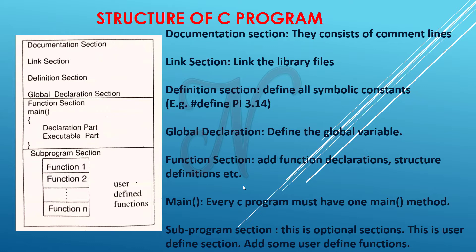Main function — every C program must have one main method. The program execution begins from the main function, so it is called the entry point function. Next is the sub-program section, which is optional. In that section we can define user-defined functions.